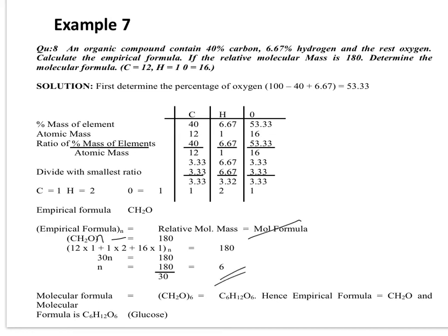So the molecular formula is (CH2O)6. When you expand the bracket with 6, you have C6H12O6 — you multiply each atom by 6. Carbon has 1, so 1 times 6 is 6, giving C6. Hydrogen has 2, so 2 times 6 is 12, giving H12. Oxygen has 1, so 1 times 6 is 6, giving O6. Hence the empirical formula is CH2O and the molecular formula is C6H12O6. This is the formula for glucose.